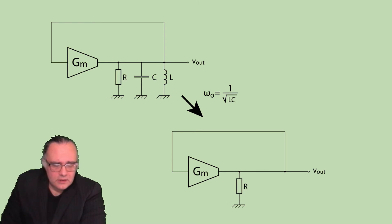So the potential of the voltage at the output node Vout will be the output current of the transconductance stage times the impedance at Vout. The impedance at Vout at the resonance frequency omega zero is just R.